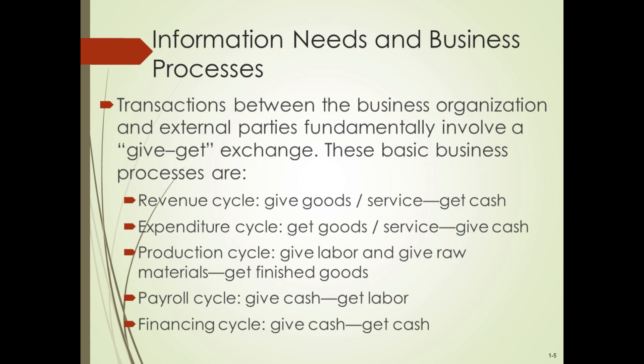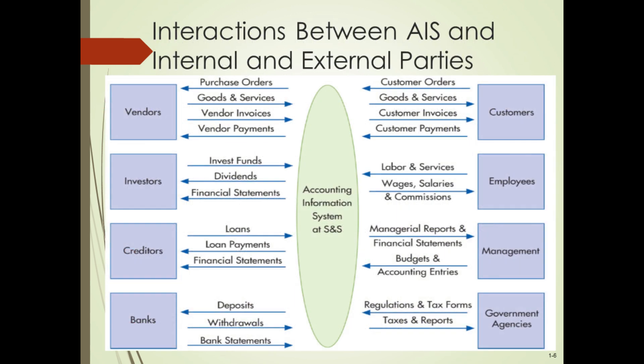There are five main transaction cycles: revenue cycle, expenditure cycle, production cycle, payroll cycle, and financing or general ledger cycle. Each cycle involves a give-and-take exchange between two or more entities.